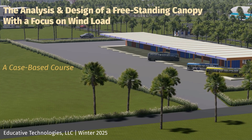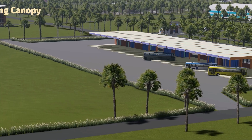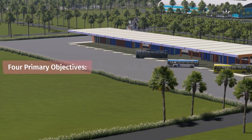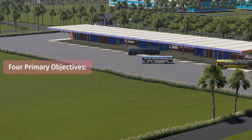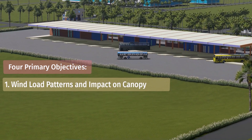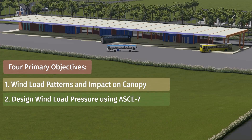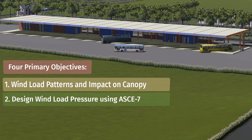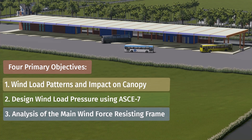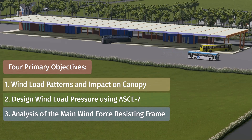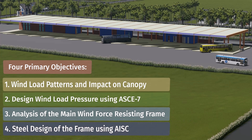A case-based course on analyzing and designing a freestanding canopy subject to wind load. In this course, we'll focus on four key areas. First, we will explore different wind load patterns and see how they affect the canopy. Next, we'll dive into identifying the primary wind pressures for design, based on the ASCE 7 standard. Then, we'll analyze a main wind force-resisting frame, factoring in both wind and dead loads. Finally, we'll design the steel components of the frame according to the AISC provisions.